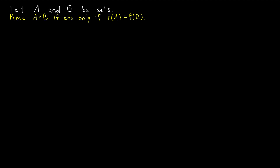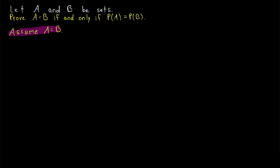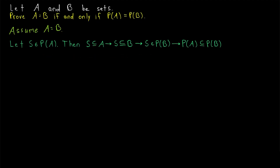We'll begin by assuming that A equals B, and we'll prove that their power sets must be equal. So we assume A equals B. To prove that their power sets are equal, we need to prove that the power set of A is a subset of the power set of B, and we need to prove that the power set of B is a subset of the power set of A. Like any subset proof, we begin by taking an element from the power set of A, and we want to show that this element must also belong to the power set of B.